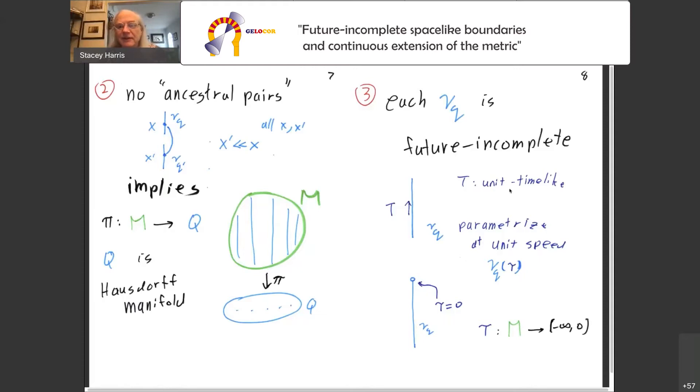So let us parameterize each one of our foliates by unit speed, like capital T be the velocity vector. And in particular, I want to parameterize these foliates so that the place where they are incomplete, called tau the parameter, the place where they stop is all tau equals zero. So then tau is a well-defined time function on our manifold. It goes into minus infinity comma zero.